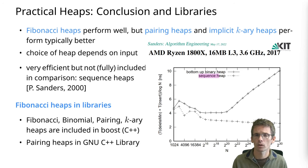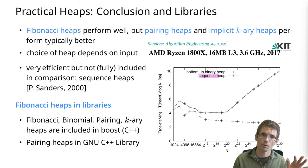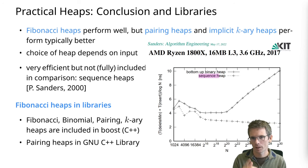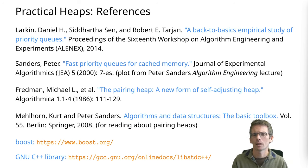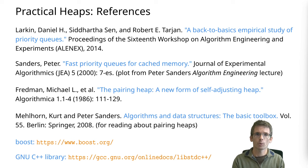Let me briefly mention some libraries where you can find heap implementations. The Boost library contains various algorithm implementations, including Fibonacci heaps, pairing heaps, and k-ary heaps. Pairing heaps in particular are more widespread and can be found in other libraries as well. To wrap up, I'll point you to the papers used: the first covers most of the experiments shown, the second is the sequence heaps paper, and I've also included the original pairing heaps paper. That's all — see you next time.